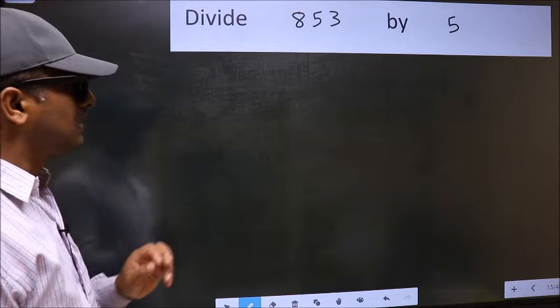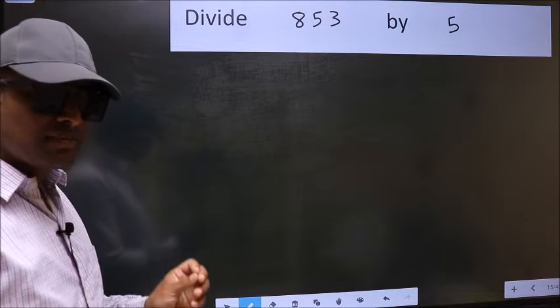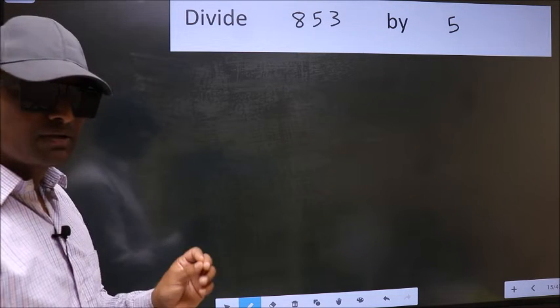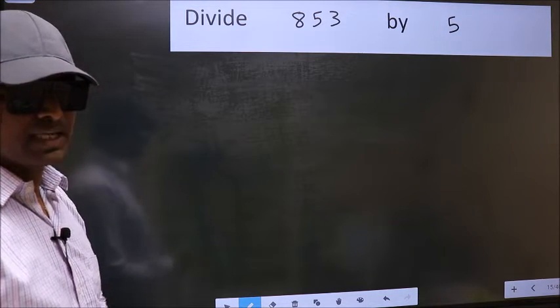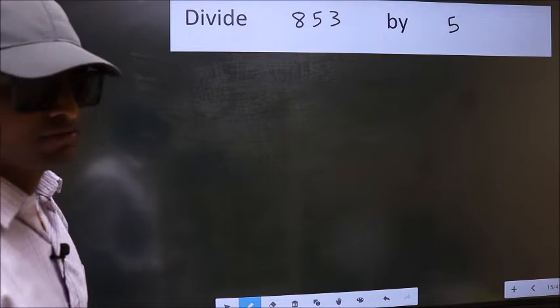Divide 853 by 5. While doing this division, many do this mistake. What is the mistake that they do? I will let you know. But before that, we should frame it in this way.